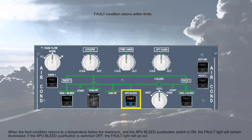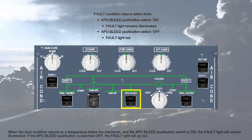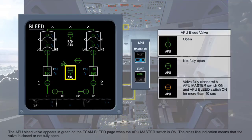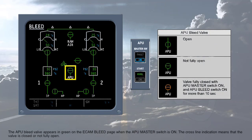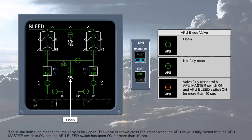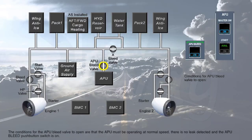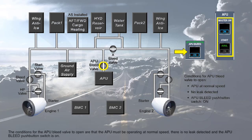When the fault condition returns to a temperature below the maximum and the APU bleed push-button switch is on, the fault light will remain illuminated. If the APU bleed push-button is switched off, the fault light will go out. The APU bleed valve appears in green on the ECAM bleed page when the APU master switch is on. The cross-line indication means the valve is closed or not fully open; the in-line indication means the valve is fully open. The valve is shown cross-line amber when the APU valve is fully closed, with the APU master switch on and the APU bleed switch has been on for more than 10 seconds. The conditions for the APU bleed valve to open are that the APU must be operating at normal speed, there is no leak detected, and the APU bleed push-button switch is on.